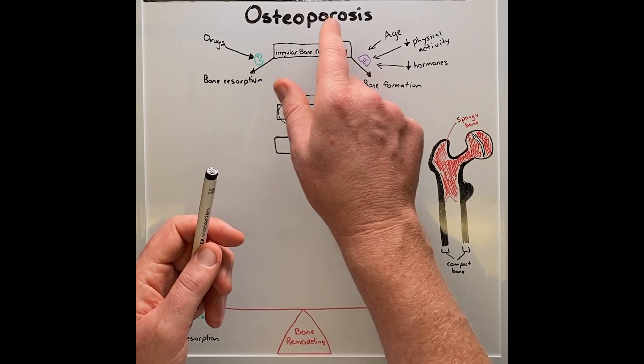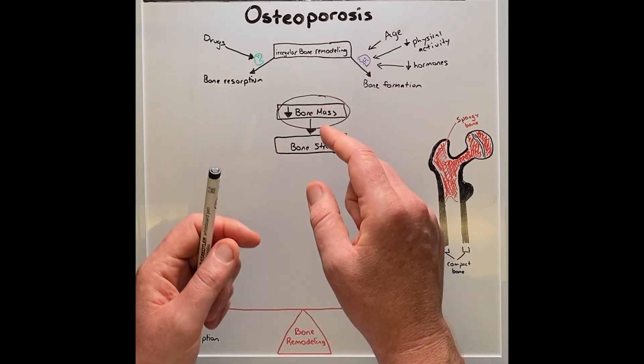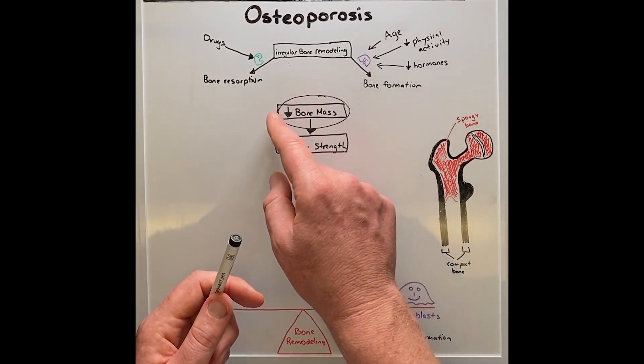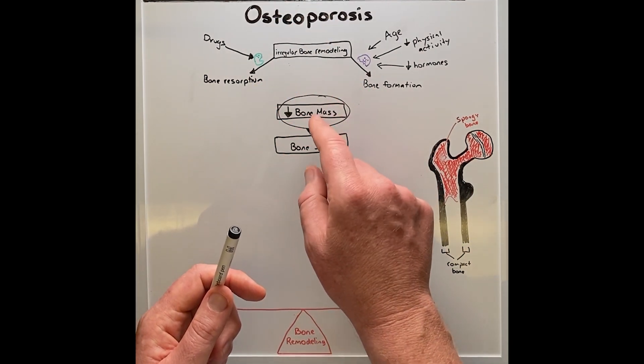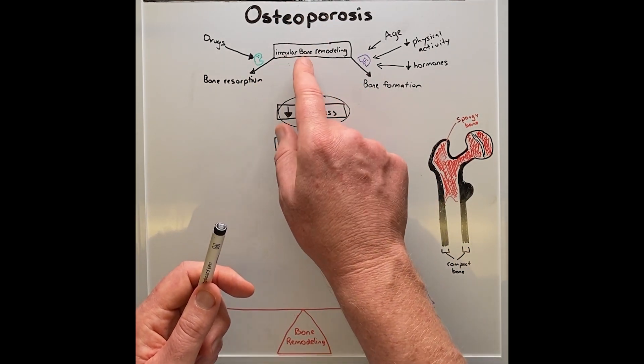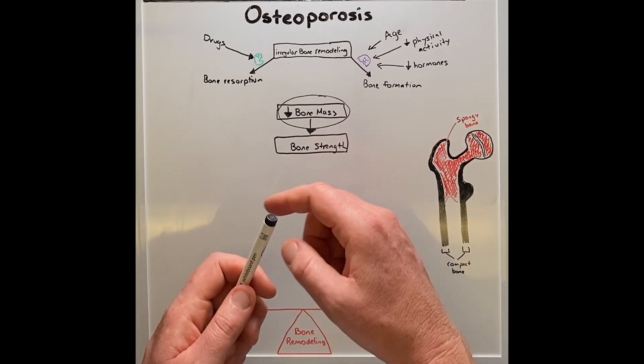Therefore, osteoporosis is a condition where we see a reduction in bone mass, where irregular bone remodeling occurs. This can be seen in a decrease in bone formation.